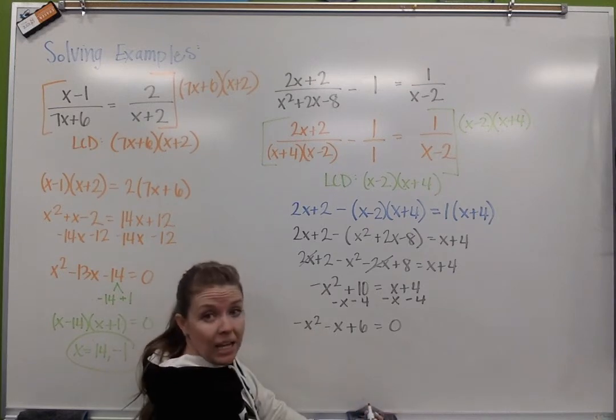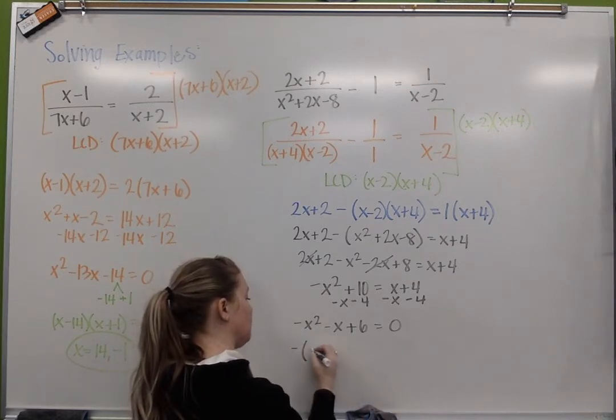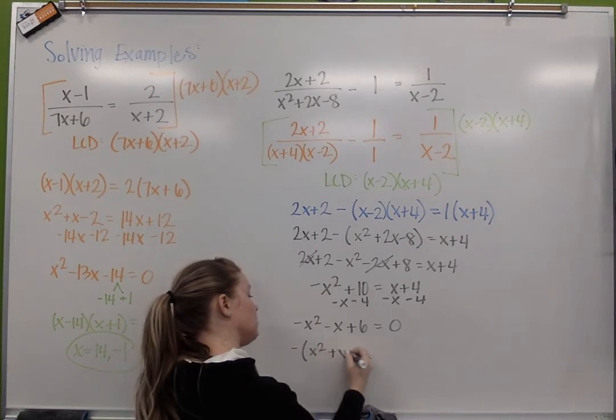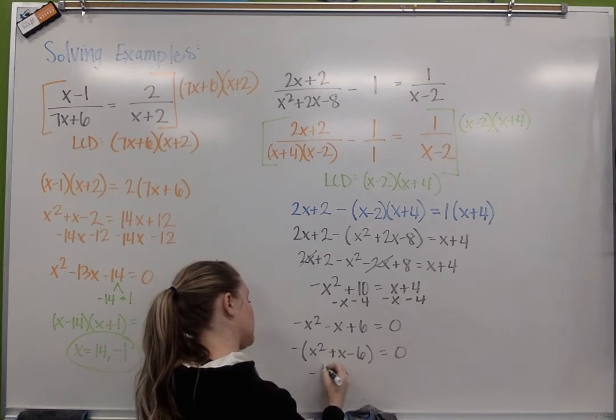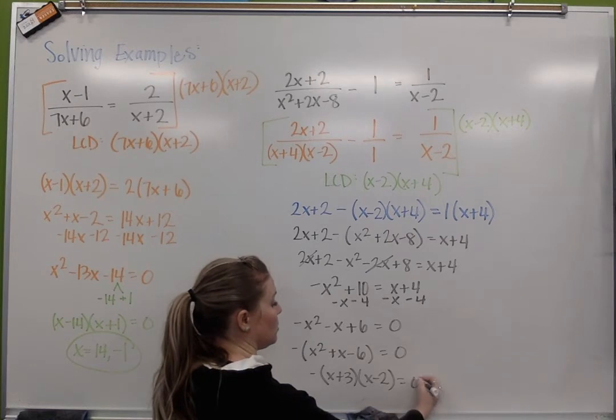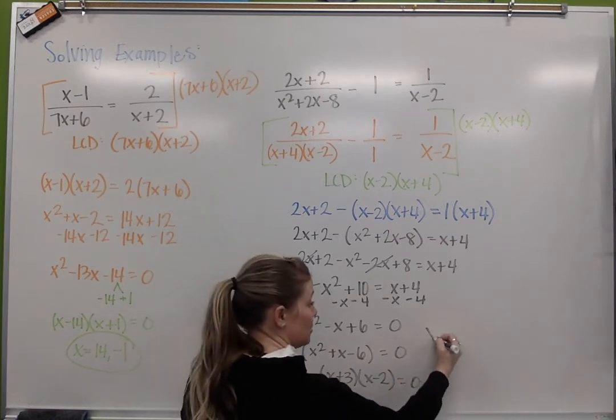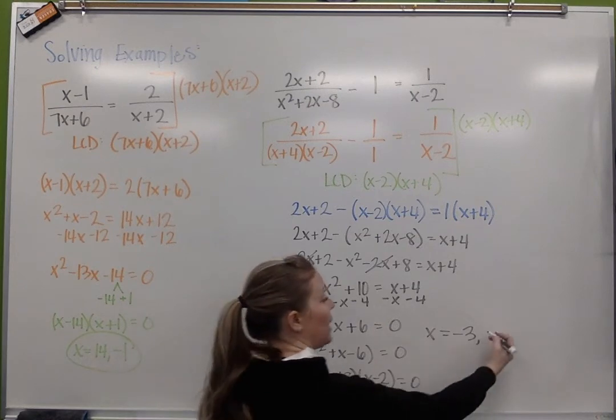I don't love factoring with this negative, so I'm going to go ahead and I can divide everything by negative 1, or I can factor out the negative 1. I'm going to factor out the negative, so I get x squared plus x minus 6, which then factors to x plus 3 times x minus 2. So now I'm seeing that my solutions are negative 3 and positive 2.